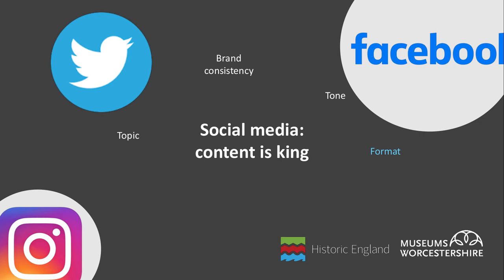A really important point that doesn't get talked about enough is format. Consider the size of images, the length of text and what types of content will be successful — it really varies between platforms as people use them for different reasons. Instagram is very visual; Twitter is more about short, snappy text. Videos or GIFs are known to be the most engaging format because they are moving and eye-catching. However, putting video clips together can be quite time consuming, so if you can't commit to producing videos just yet, it is good to start developing an image bank which your team can access — events pictures, general images of your buildings or collections, images of different seasons. This is a gradual process but will save time in the future.